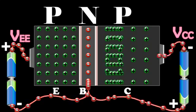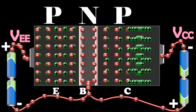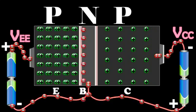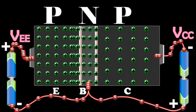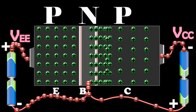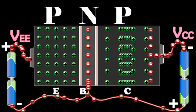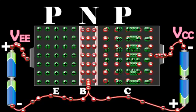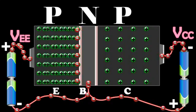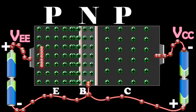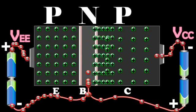The holes diffuse through the base. These holes take a very small time to flow through this region before they reach the depletion region. During this time, a very small number of holes recombine with an equal number of electrons in the base, because the base is lightly doped and very thin.